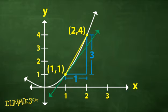Even though the sliding point never reaches 1,1 — if it did, you'd only have one point left. You need two separate points to use the slope formula.